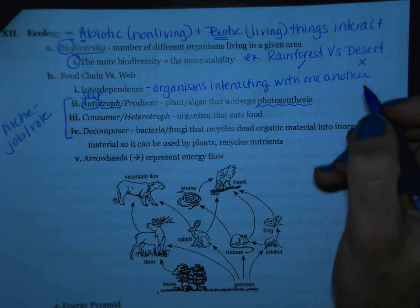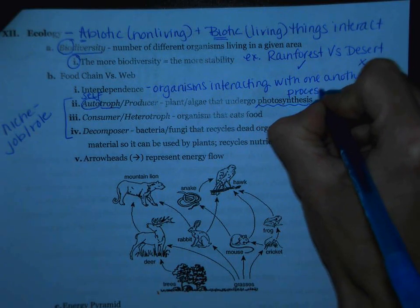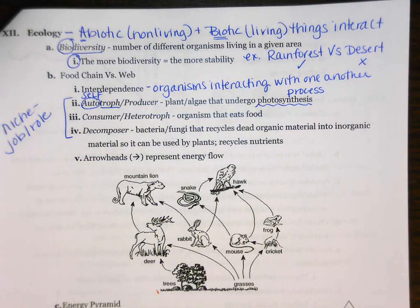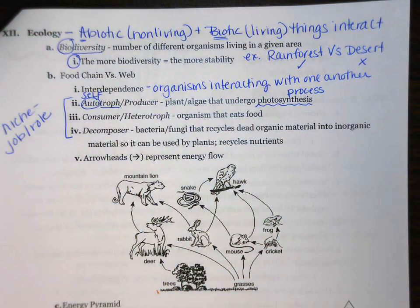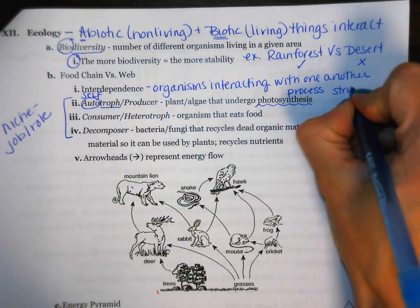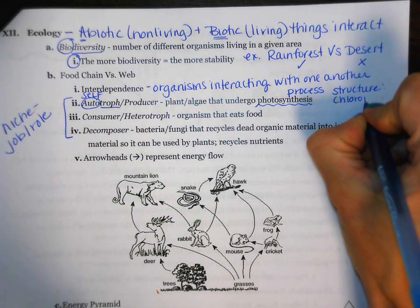Photosynthesis is considered a process. We also need to be familiar with the structure where photosynthesis takes place — so remember two words: process and structure. The structure where photosynthesis takes place is the chloroplast.